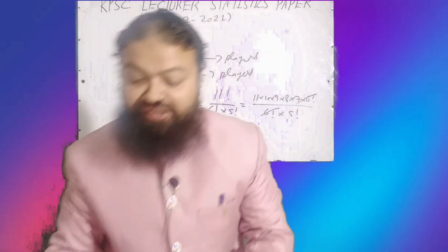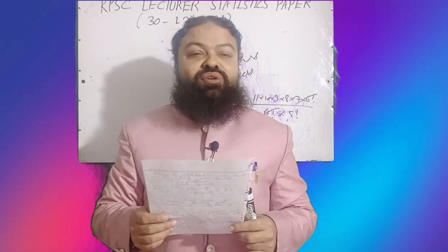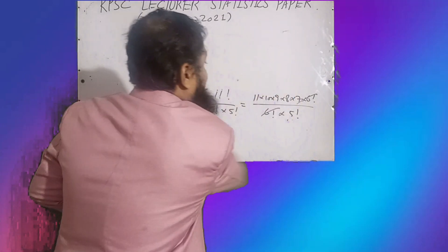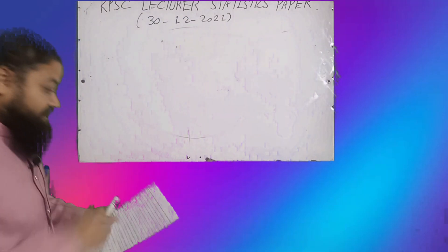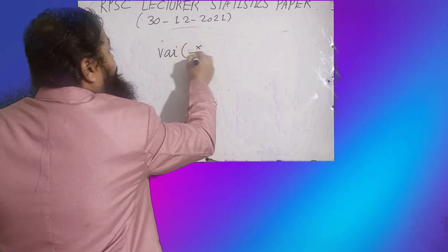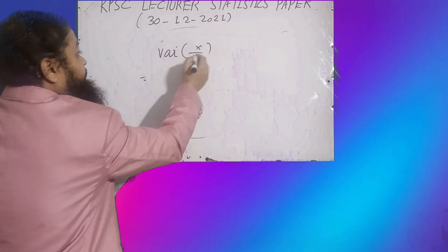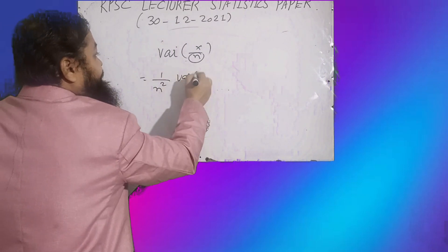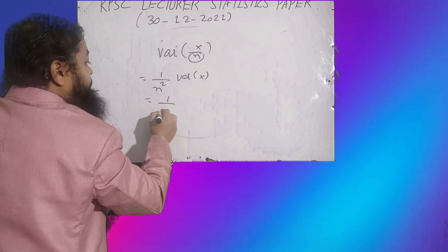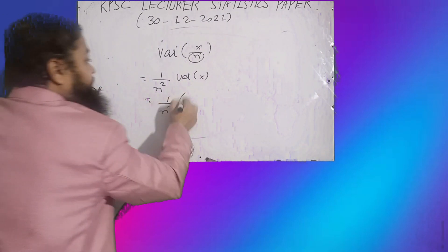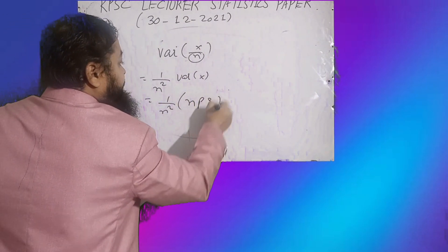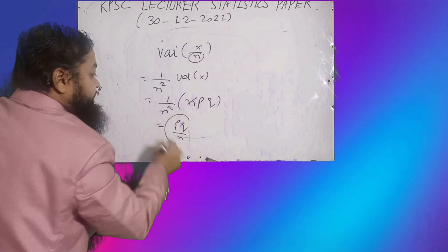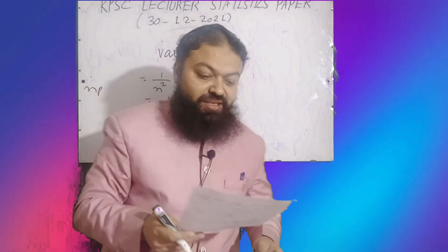The next question: if x follows binomial distribution, what is the variance of x/n? We know Var(x/n) = (1/n²) × Var(x). In binomial distribution, mean = np and variance = npq. So Var(x/n) = (1/n²) × npq = pq/n. That is the correct answer.